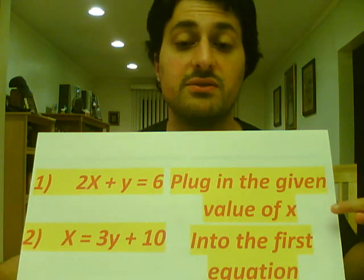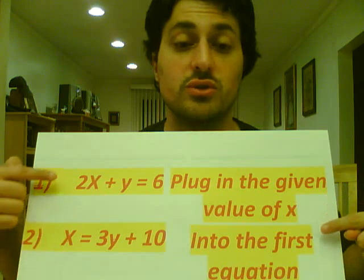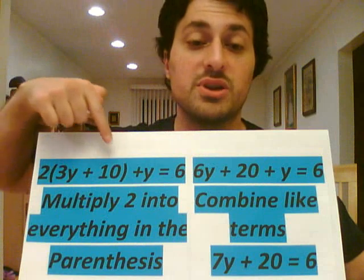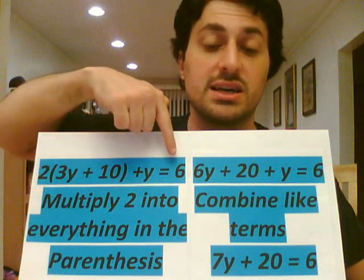We will then plug in the given value of this x into the first equation, which will leave us with 2 times 3y plus 10 plus y equals 6.